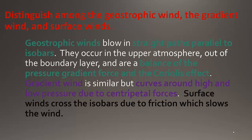The first question in the list of short answer questions is: distinguish among the geostrophic wind, the gradient wind, and the surface winds. The geostrophic winds blow in straight paths parallel to isobars. They occur in the upper atmosphere out of the boundary layer, and they are a balance of the pressure gradient force and the Coriolis effect. Gradient winds are similar, but they curve around high and low pressure cells due to centripetal forces. Surface winds cross the isobars due to friction which slows the wind down, and that friction at the surface does not exist above the boundary layer in the upper atmosphere.